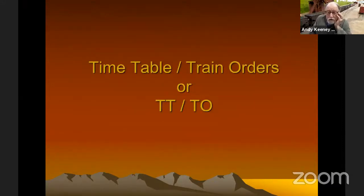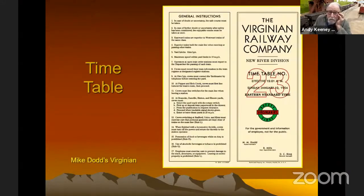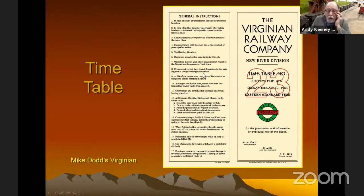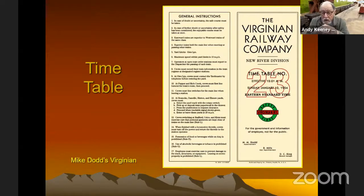So timetable train orders, or TTTO — some people love them and some people hate them. But the operators that really get into operation find timetable and train orders very interesting, challenging, and a lot of fun. It's a good way to have your cornfield meets if you're not paying attention. The timetable is an employee timetable. The real railroads had these and updated them on a regular basis. This one is Mike Dodd's Virginian Railway — he created this timetable for his railroad operations.